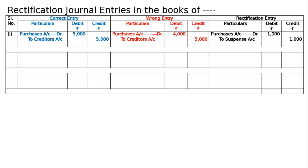Because all other accounts and amounts are correct, but there is a mistake in the Purchase account only. The narration for this will be: undercasting in Purchase book is rectified by debiting Purchase account by Rs. 1000.